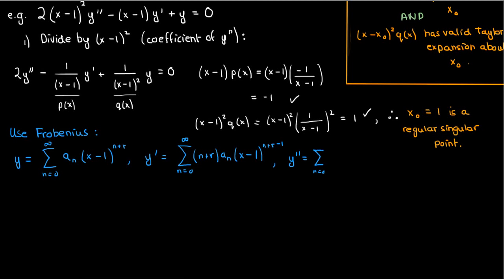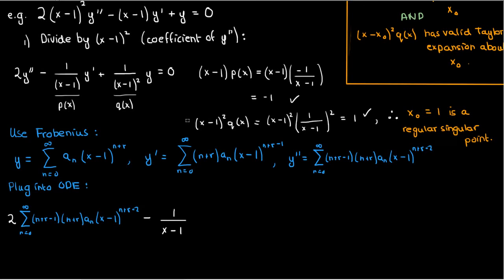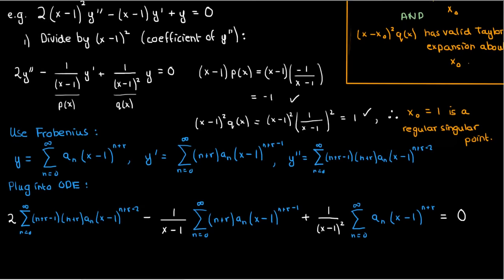Now let's substitute all of this into our differential equation. We'll get 2 times the sum from n = 0 to infinity of (n+r)(n+r-1)aₙ(x-1)^(n+r-2) - 1/(x-1) times the sum from n = 0 to infinity of (n+r)aₙ(x-1)^(n+r-1) + 1/(x-1)² times the sum from n = 0 to infinity of aₙ(x-1)^(n+r), and all of that equals 0. It's pretty easy to simplify this since everything is in terms of (x-1). All we have to do is stick the (x-1) terms into the summations.